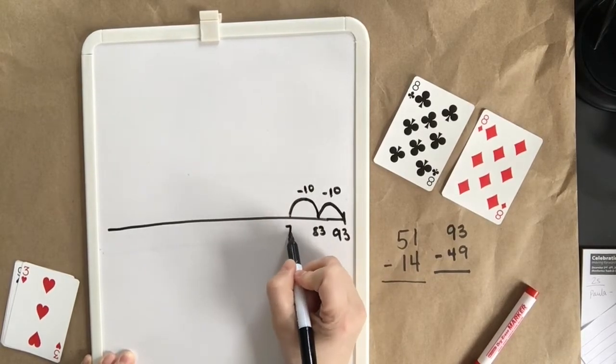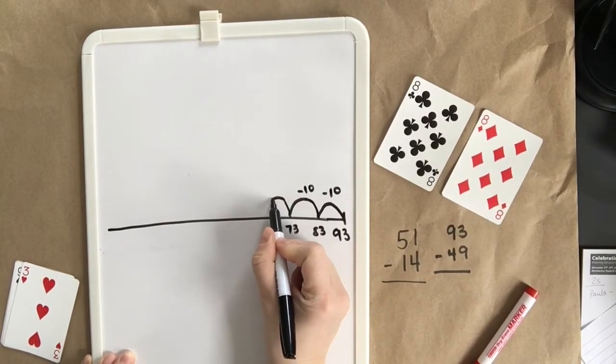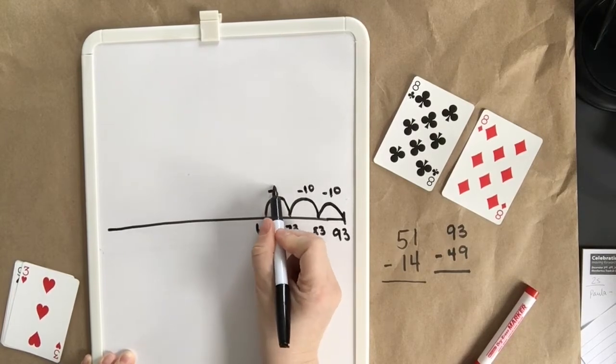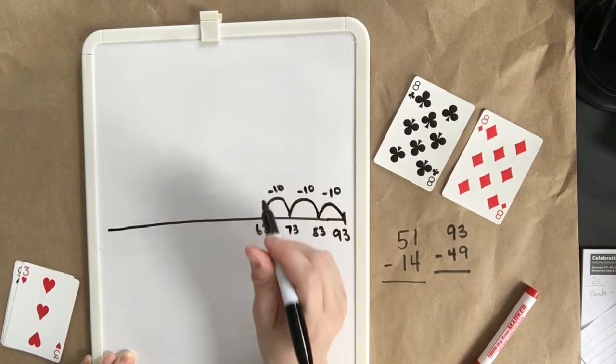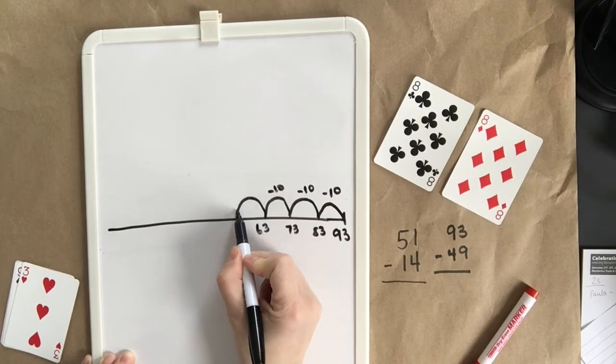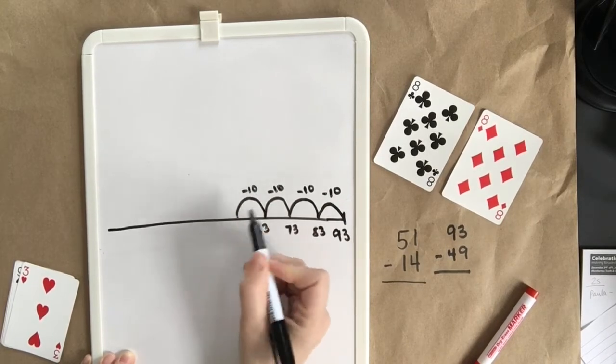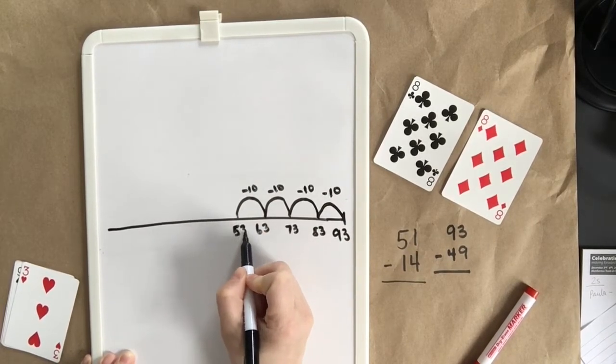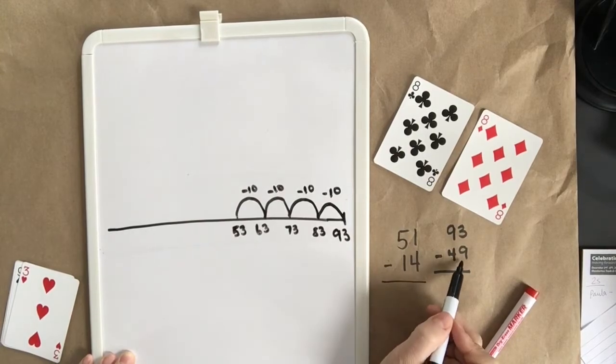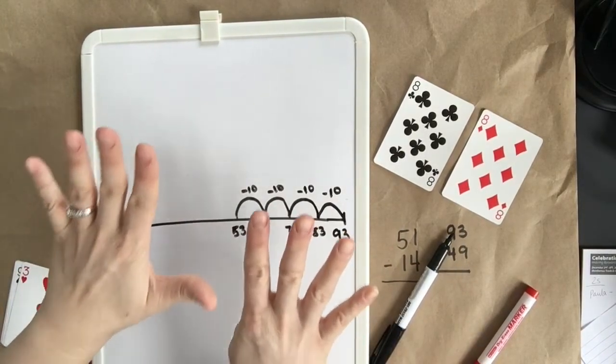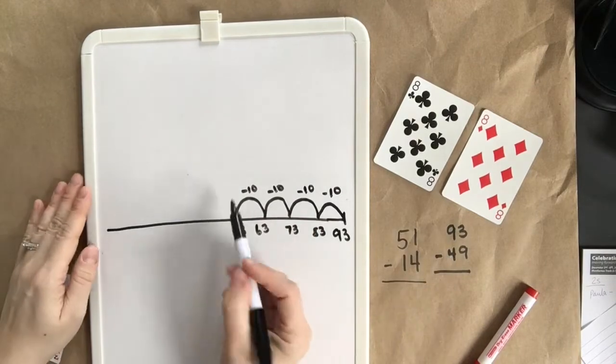Another 10 would be 73. Another 10, 63. 10, 20, 30. Another 10 would be 53. And now we've got 9 left to go. You'll see me holding up my 9 fingers.